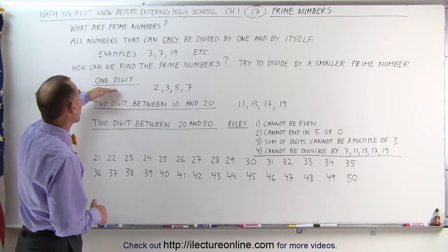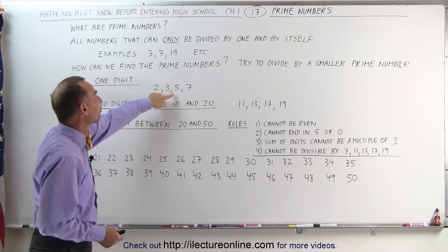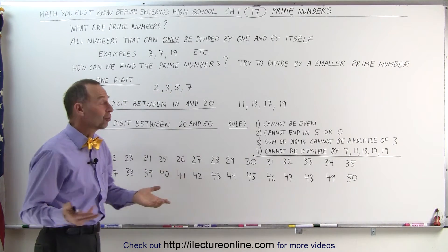For example, when we talk about a one-digit number, we should simply memorize that the numbers 2, 3, 5 and 7 are the prime numbers smaller than 10.